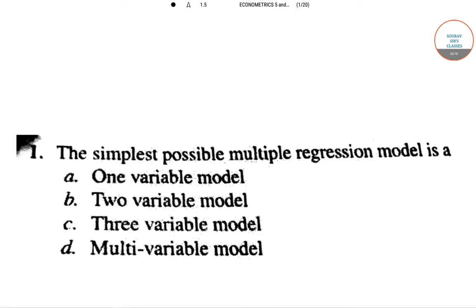So the first question is: the simplest possible multiple linear regression model is a one variable model, two variable model, three variable model, or a multi-variable model.